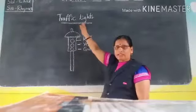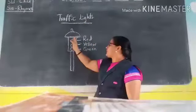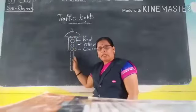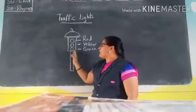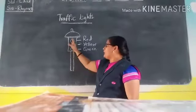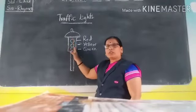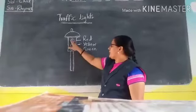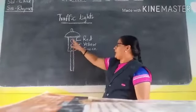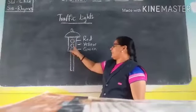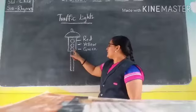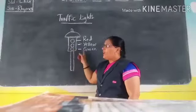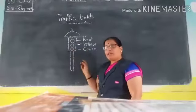Traffic lights. There are three lights on the signal board. You can see the three lights on the signal board. The first one is red light, the second one is yellow light, and the third one is green light.